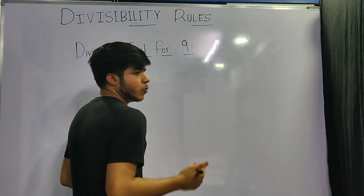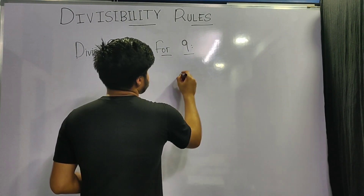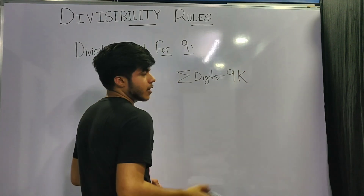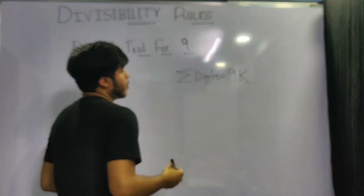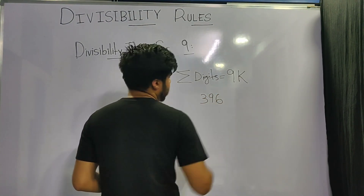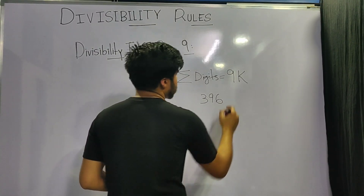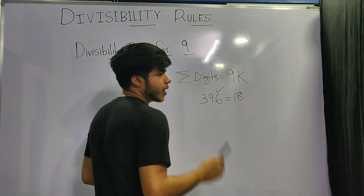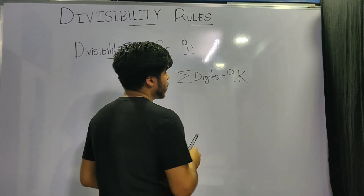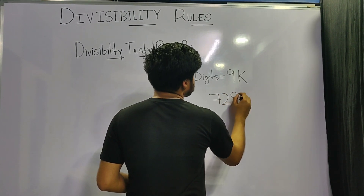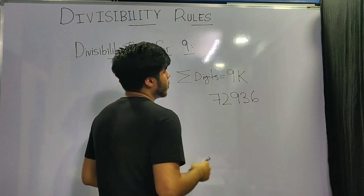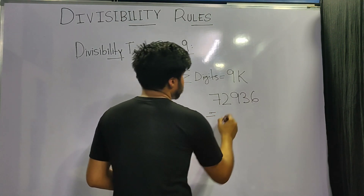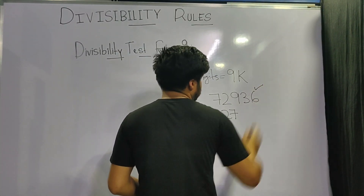The rule for the number 9 is similar to that of 3: if the sum of its digits is a multiple of 9, then the number is divisible by 9. For example, 396 has a digit sum of 18, which is divisible by 9, so 396 is divisible by 9. Similarly, 72936 has a digit sum of 27, which is divisible by 9, so 72936 is also divisible by 9.